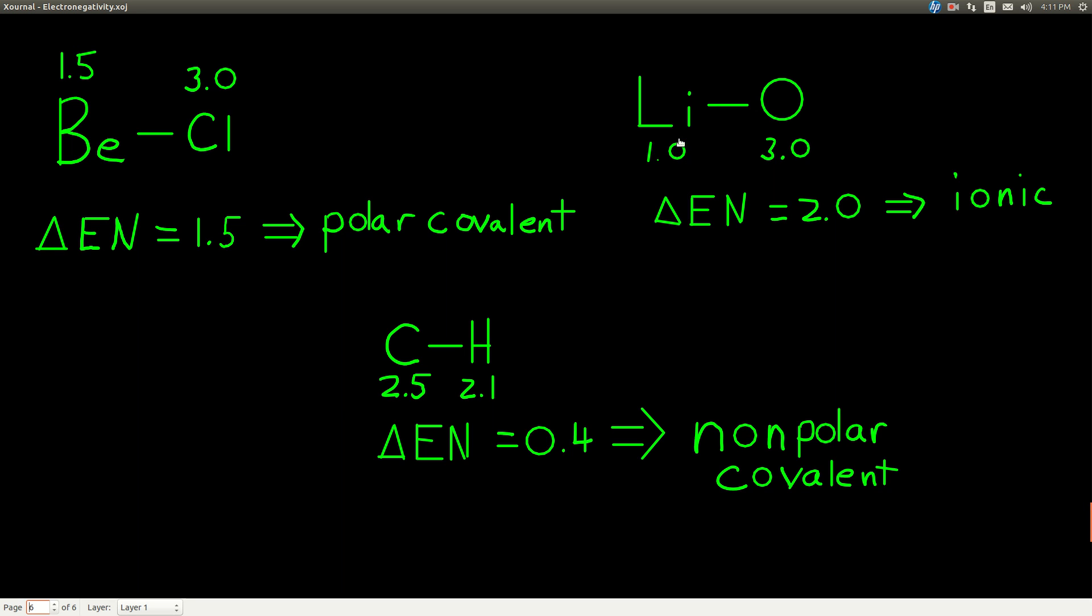On the other hand, if we look at a bond between lithium and oxygen, lithium is 1.0, it's electronegativity, oxygen is 3.0, the difference, the delta EN is 2.0, making that an ionic bond. And then if we look at carbon-hydrogen bonds, carbon is 2.5, hydrogen is 2.1, the delta EN, the difference in electronegativity is 0.4, making this a nonpolar covalent bond.